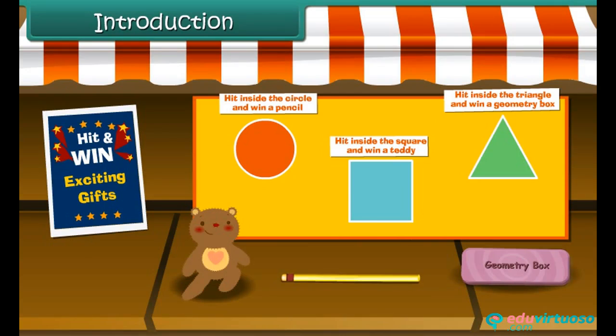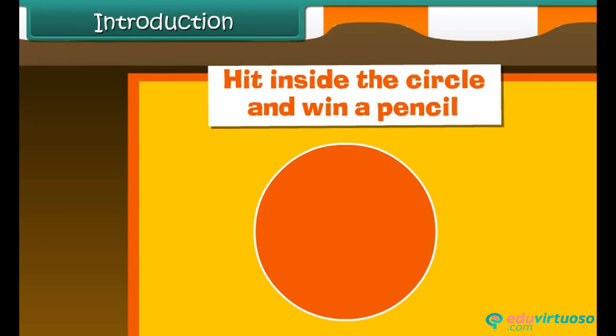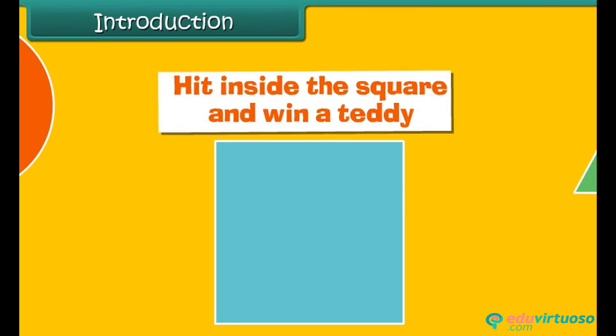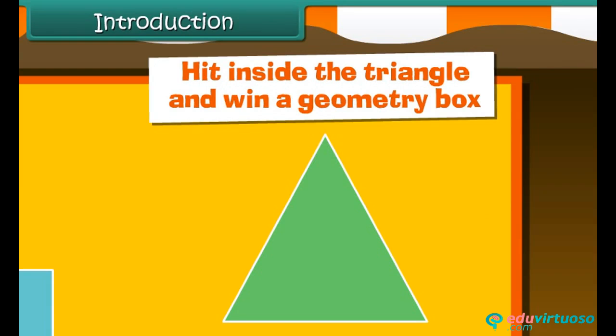There were few shapes on a board. At the top of the board, few lines were written. Hit inside the circle and win a pencil. Hit inside the square and win a teddy. Hit inside the triangle and win yourself a geometry box.